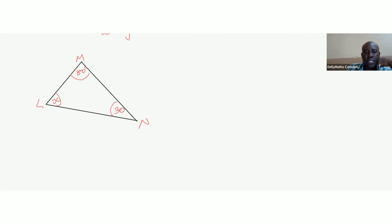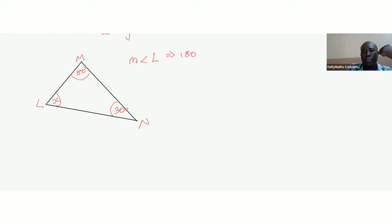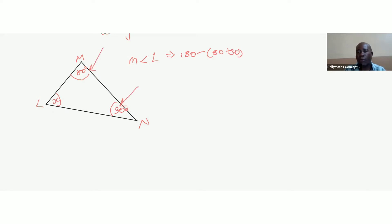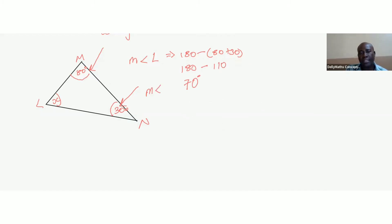We want to find the measure of angle L. That's going to be 180 degrees minus the sum of 80 plus 30 degrees. Adding the angles at M and N gives 110, so we take 110 from 180 and we get 70. The measure of angle L is 70 degrees.